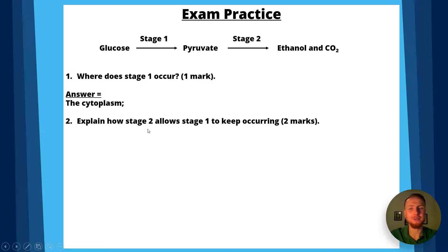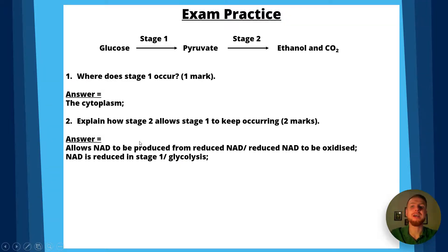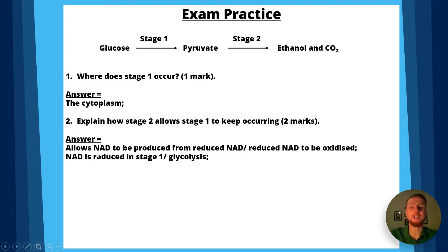Question 2: explain how stage 2 allows stage 1 to keep occurring — worth 2 marks. The answer: stage 2 allows NAD to be produced from reduced NAD (i.e., reduced NAD is oxidized). The second mark is for stating that NAD is reduced in stage 1, which is glycolysis.